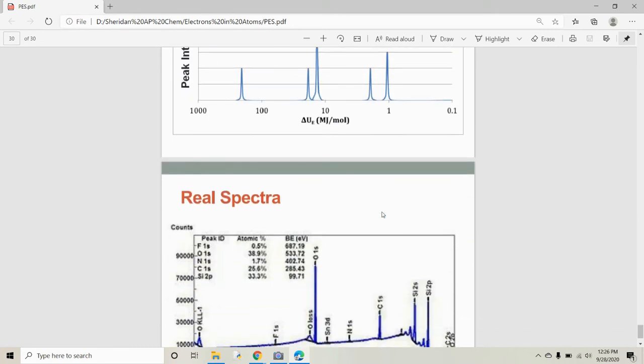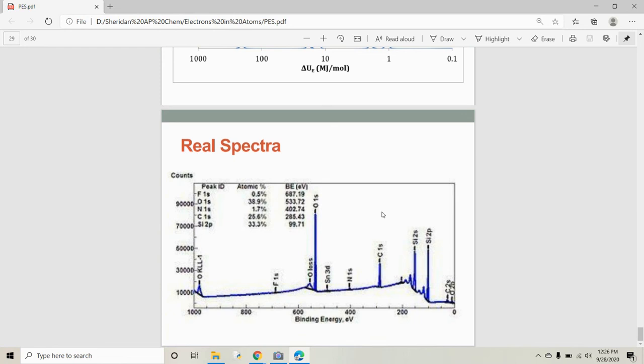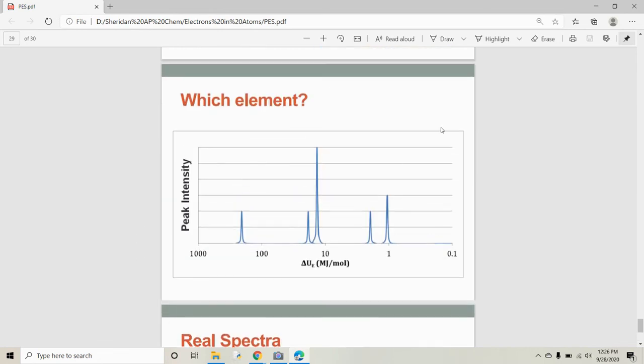And then this is what real spectra looks like. Hopefully, you don't have to ever do this yourself and identify all these. But if you do someday, it'll be a little bit more confusing. This has multiple elements in it. It's element with a mixture of fluorine, oxygen, nitrogen, carbon, and silicon. So, this is nothing you'll see on the AP exam. We just get to deal with nice, simple elements like this.